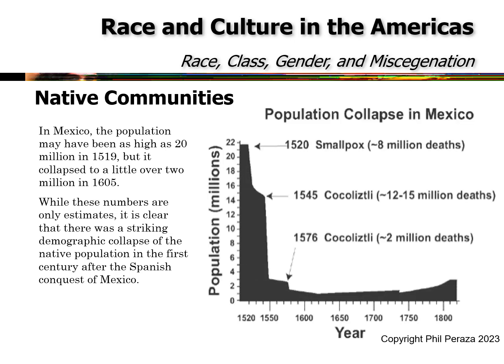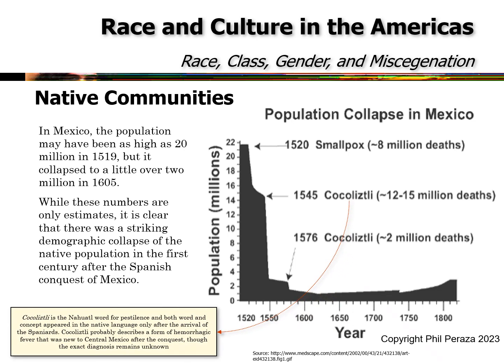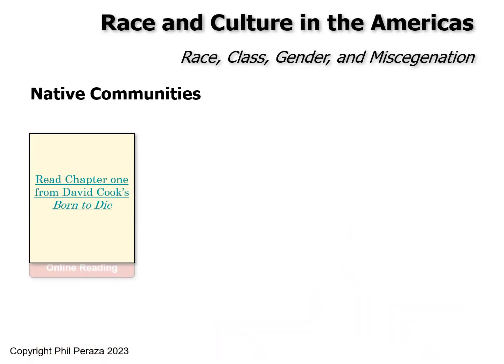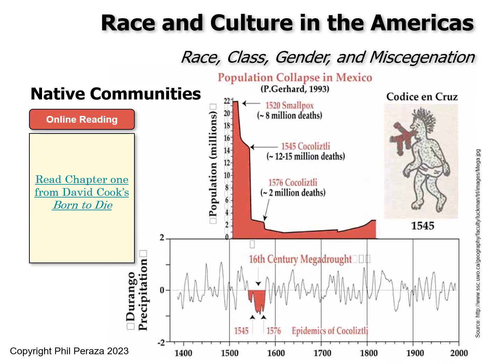As you can see in the graph, the collapse by smallpox — in the millions. When you compare that to recent times, there are now vaccines against smallpox and these other diseases. Read Chapter 1 from David Cook's Born to Die, which illustrates the population collapse in Mexico.